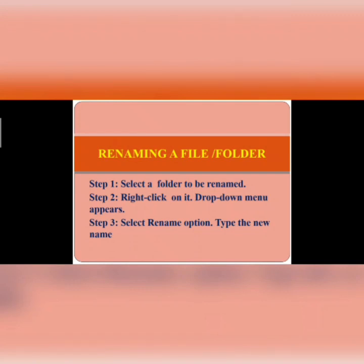You can rename a folder using three steps. Step one: select the file or folder to be renamed. Step two: right-click on top of the folder and a drop-down menu will appear. Step three: select the rename option. When you click rename, a blue highlight will appear around the folder name, and you can type the new name. Let's watch how to do it on the computer.